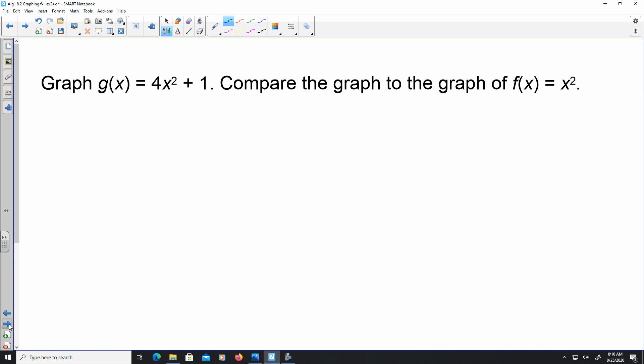Here again, just looking at comparing. The first one is going to be a stretch because a is four, four is greater than one. My absolute value of four is greater than one. And the second part is my vertex is going to be located at (0, 1) because c is one, or we could say that the vertex moves up one unit.